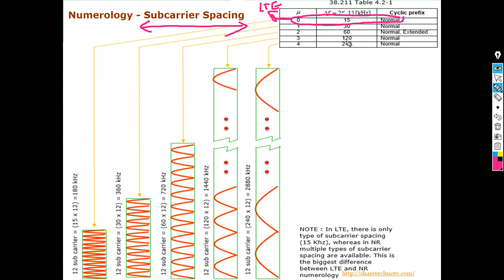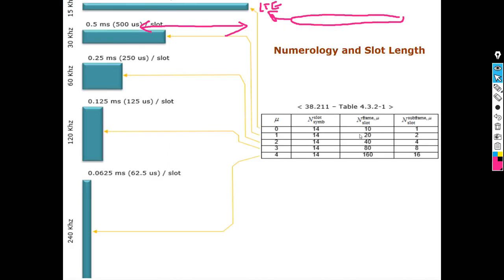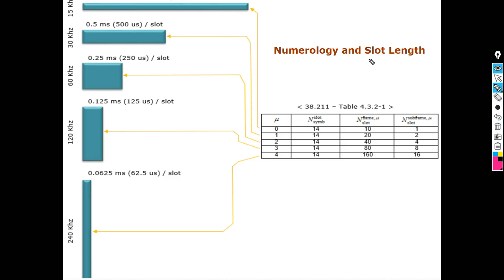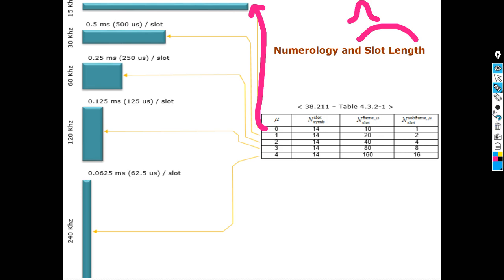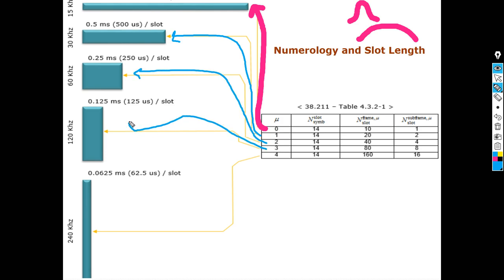When you have small sub-carrier spacing, the symbol duration becomes large and wide. When you increase the sub-carrier spacing, the symbol shrinks. Numerology 1 corresponds to larger symbol duration; numerology 2 to smaller; and so on — larger spacing means smaller symbol. Not only the duration changes, but also the power amplitude.